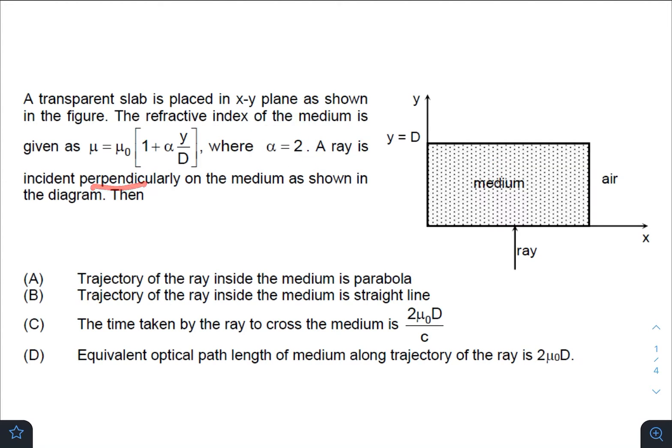A ray is incident perpendicularly on the medium as shown in the diagram. The first option is: trajectory of the ray inside the medium is parabola. Impossible! Since it is perpendicular, it will move in a straight line. So option A is wrong, option B is correct.